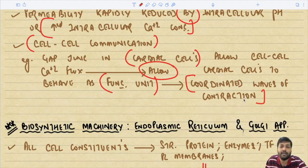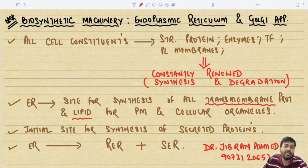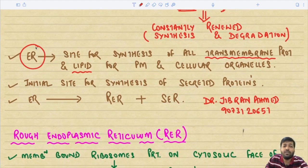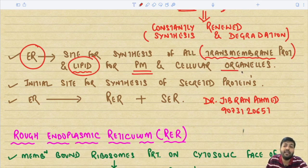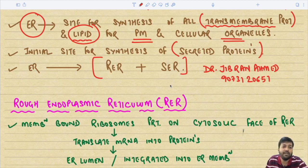Now we turn to the biosynthetic machinery: the endoplasmic reticulum and Golgi apparatus. All cell constituents — structural proteins, enzymes, transcription factors, plasma membrane, and phospholipids — need constant renewal. The ER is the site for synthesis of all transmembrane proteins and lipids destined for the plasma membrane and other organelles, as well as secreted proteins. There are two types: rough ER and smooth ER.